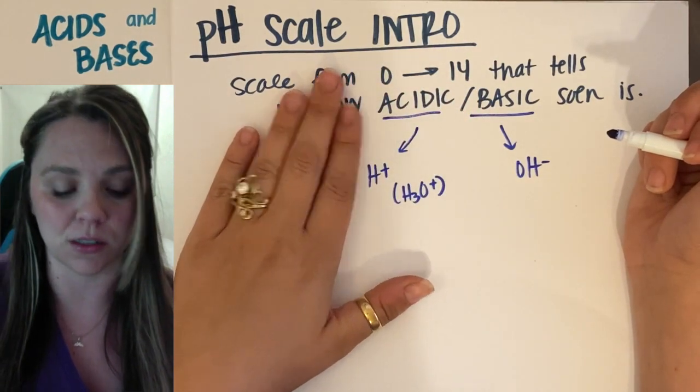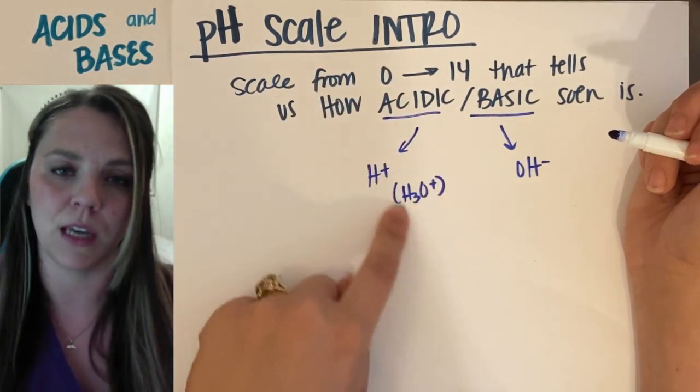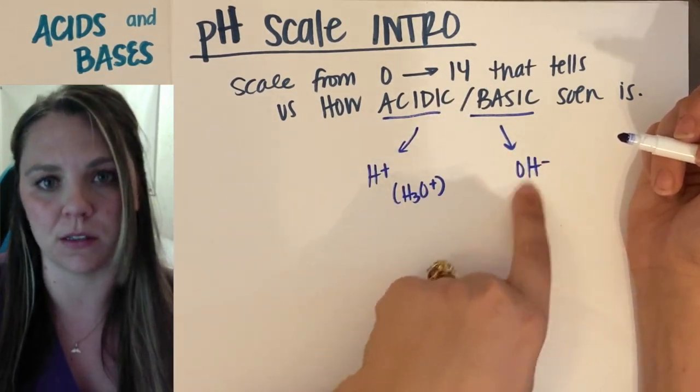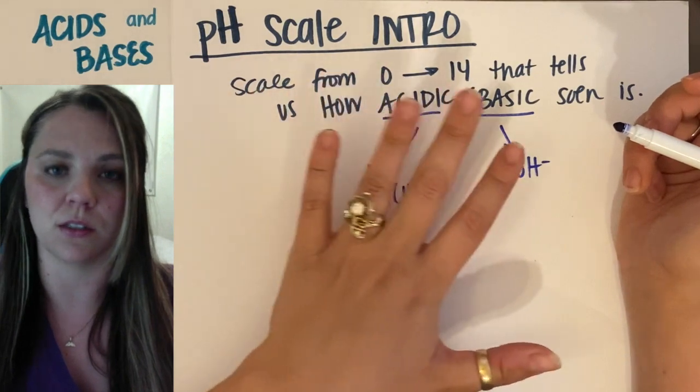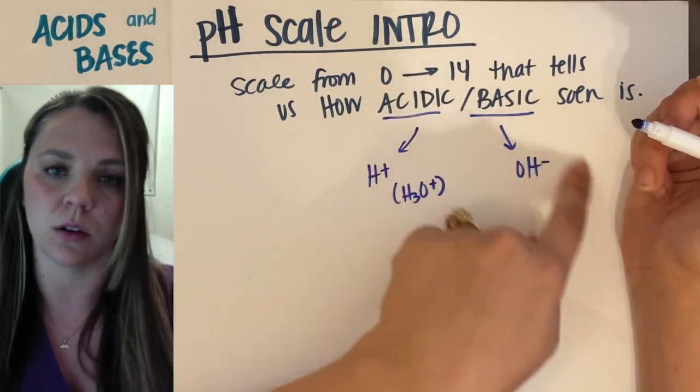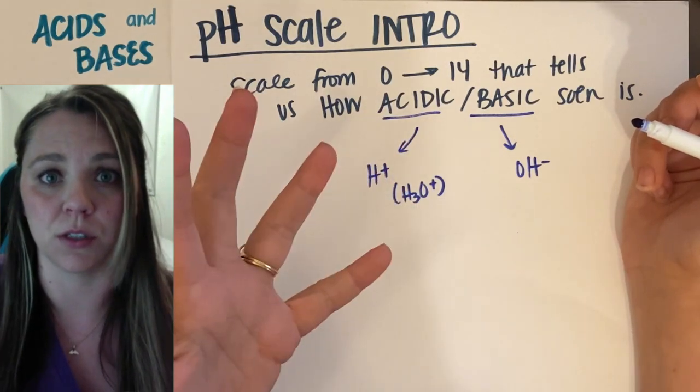So the more and more acidic that it is on the pH scale, the more H+, H3O+. And the more and more basic it is, the more OH-, the more hydroxides. So that's all the pH scale is, it just tells us how much H+ or OH- is actually in a solution.